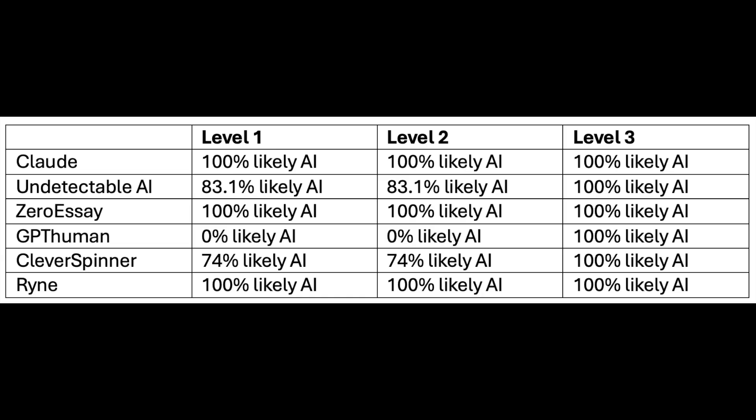What can we learn from all of that? Undetectable AI are liars — they said their humanized text could bypass CopyLeaks, but it didn't bypass any level of sensitivity, with its lowest score being 83.1% likely AI. The same goes for ZeroEssay. Rhyne is not so great when it comes up against powerful AI detectors like CopyLeaks. But we seem to have a new champion when it comes to bypassing AI detection with coherent writing — GPT Human got a 0% likely AI score with both level 1 and level 2 sensitivity. Every version got 100% at level 3, and real human writing got 0%, which really illustrates the efficacy of this AI detector.